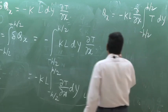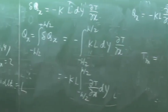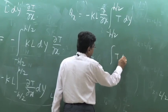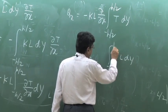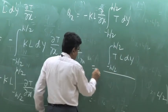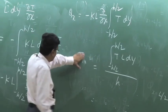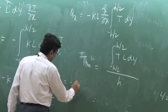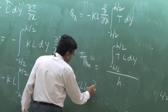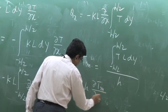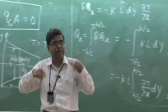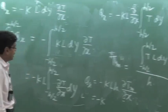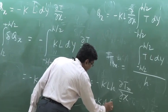We define a cross-sectional mean temperature T_m as the integral of T·dy from −h/2 to +h/2 divided by h. With this definition, q_x becomes −K·l·h·(dT_m/dx). Since T_m is only a function of x, the partial derivative becomes an ordinary derivative, and l·h is simply A(x), the area at that section.